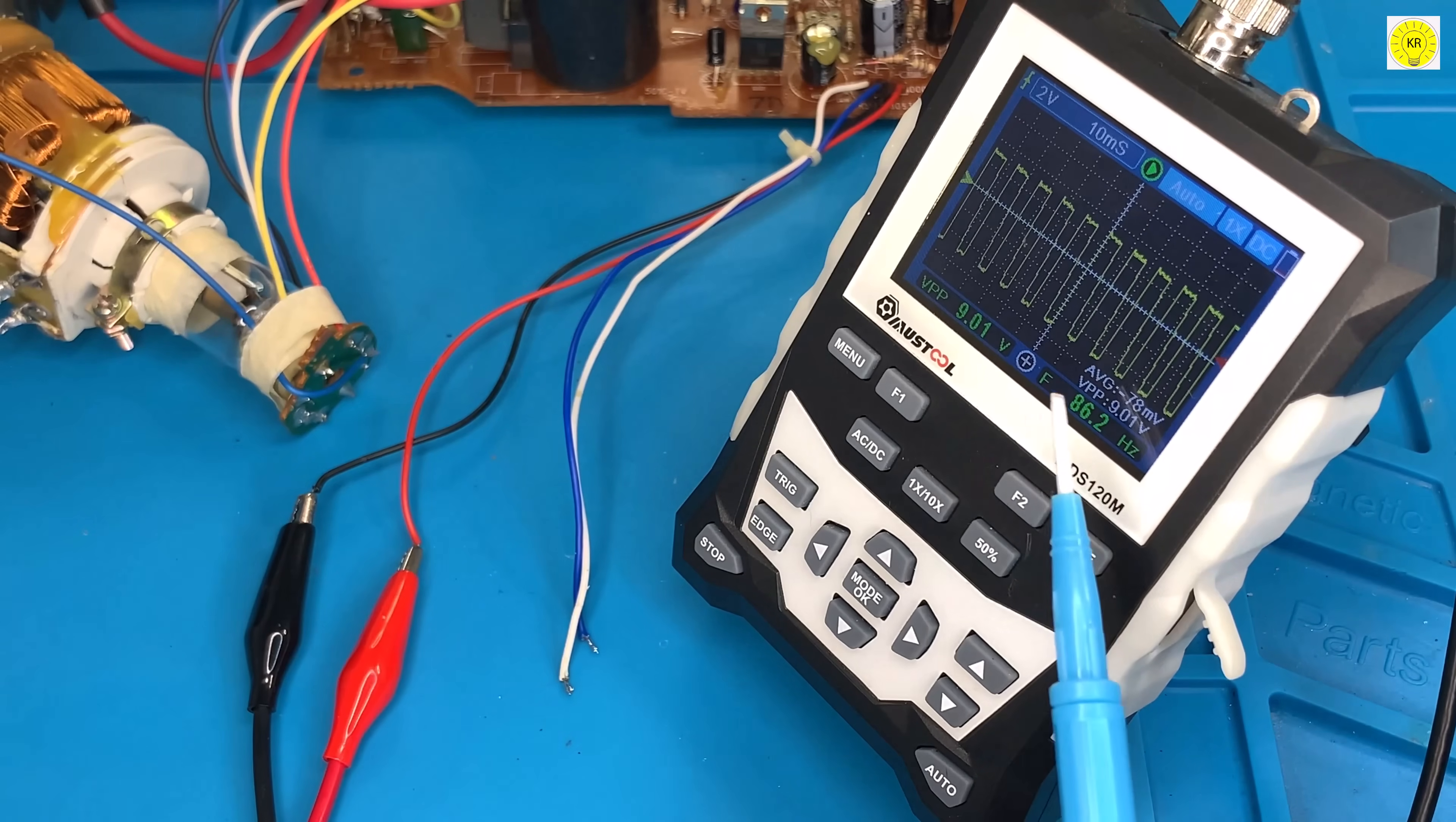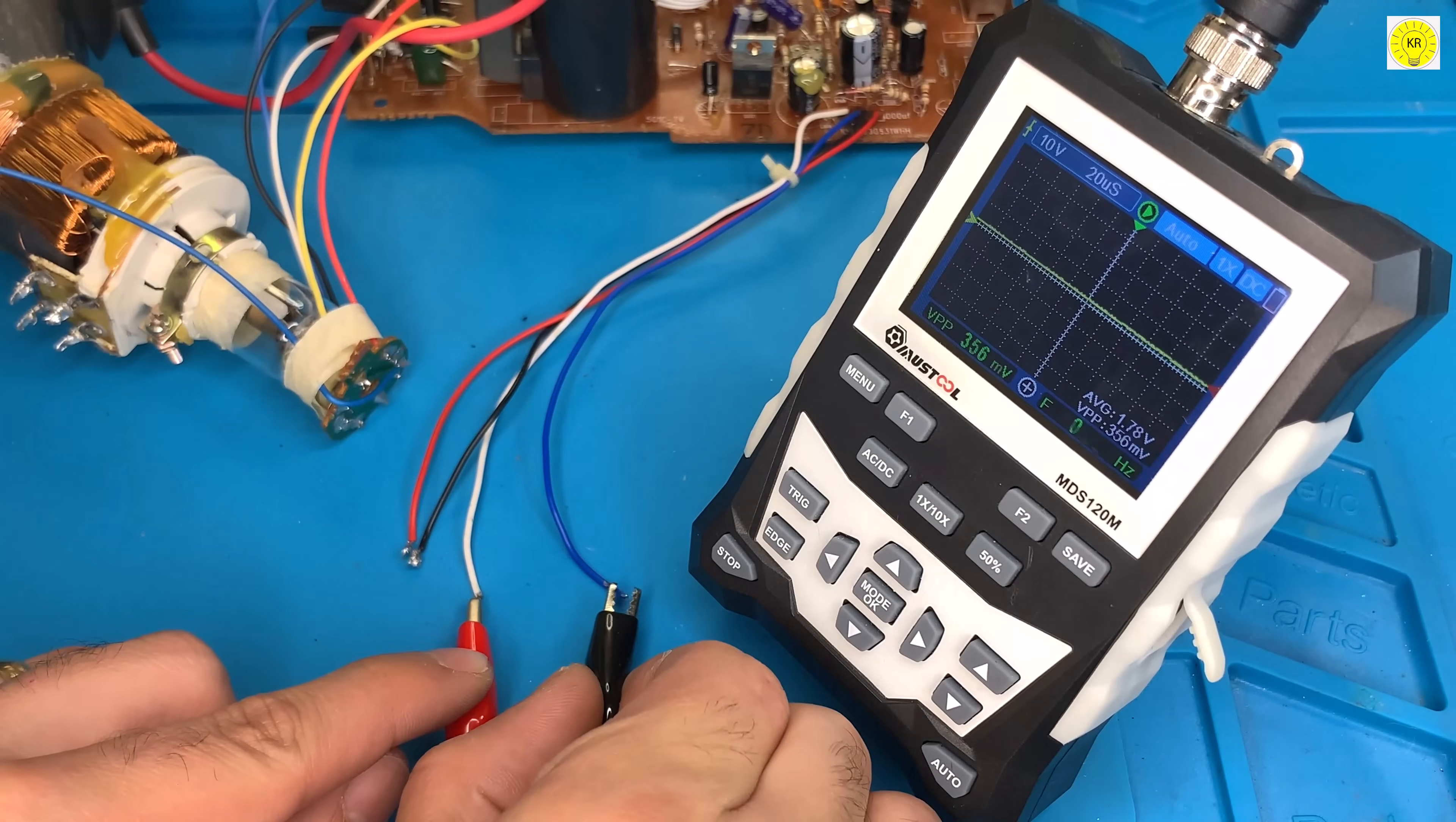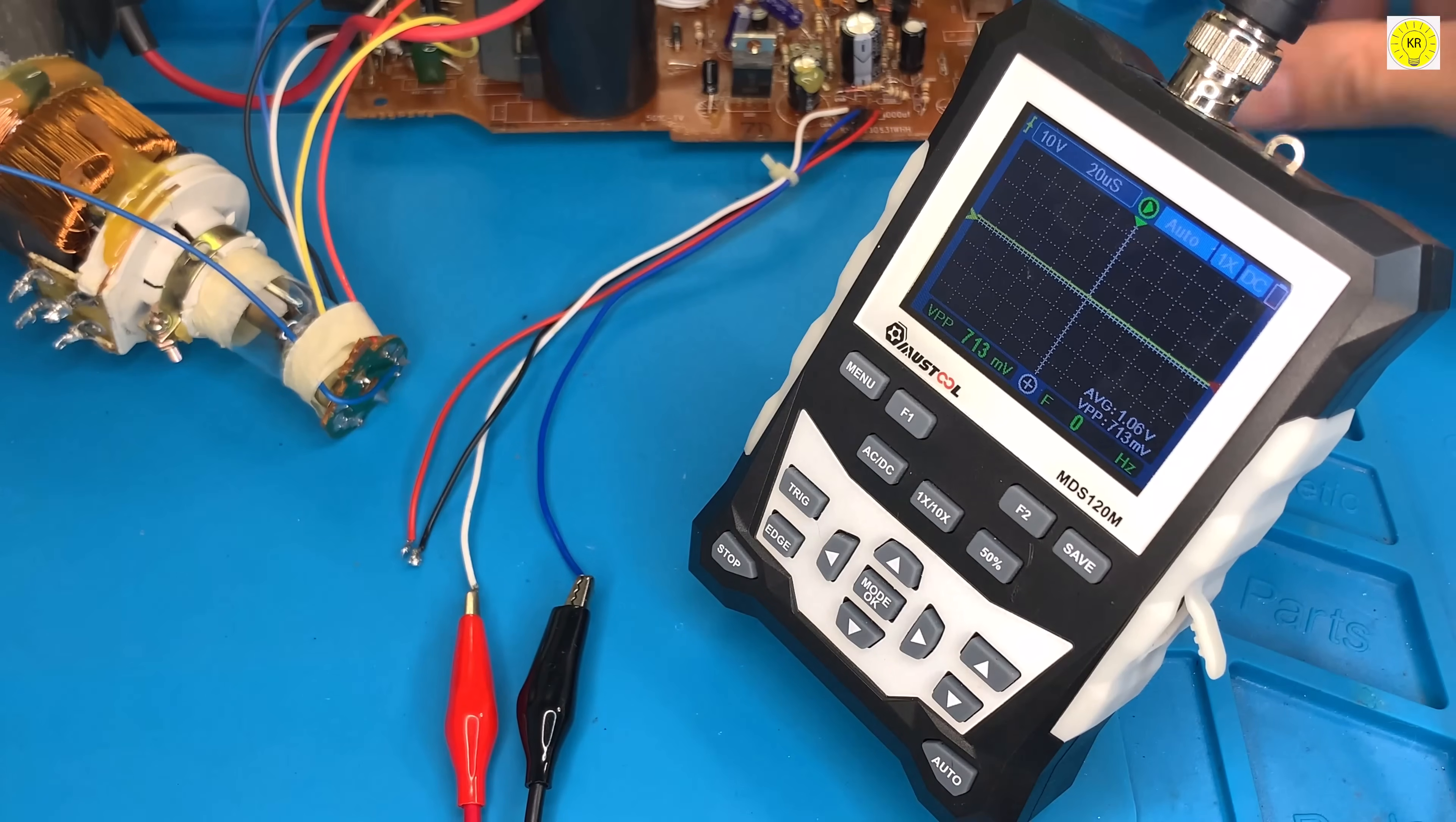A vertical coil has a frequency of about 90 Hz, and a horizontal coil has a frequency of about 14 kHz.